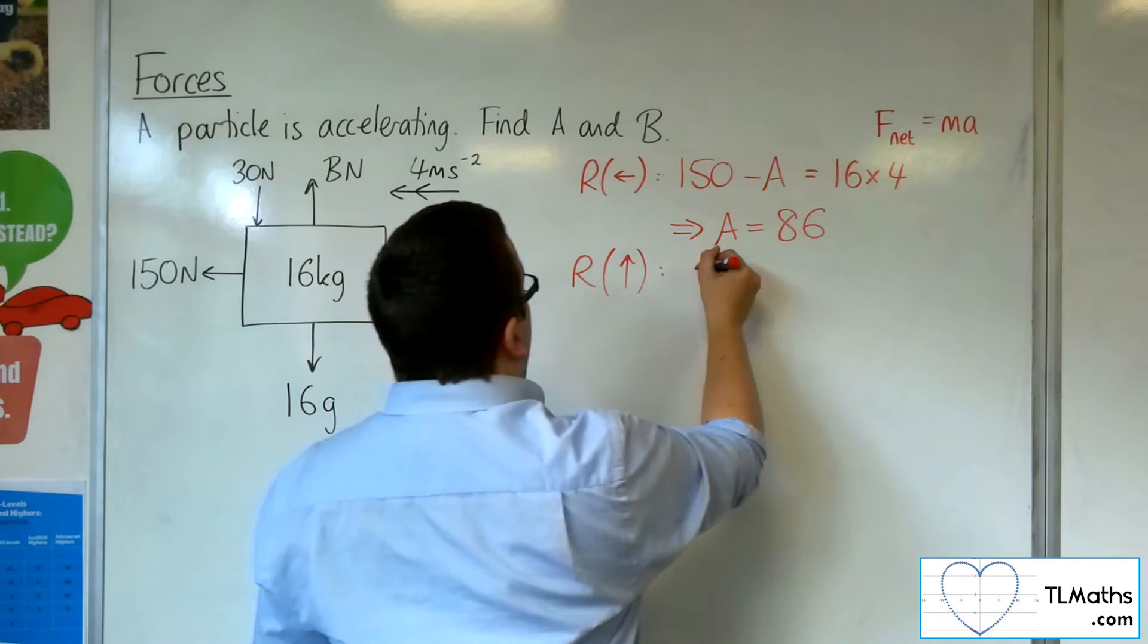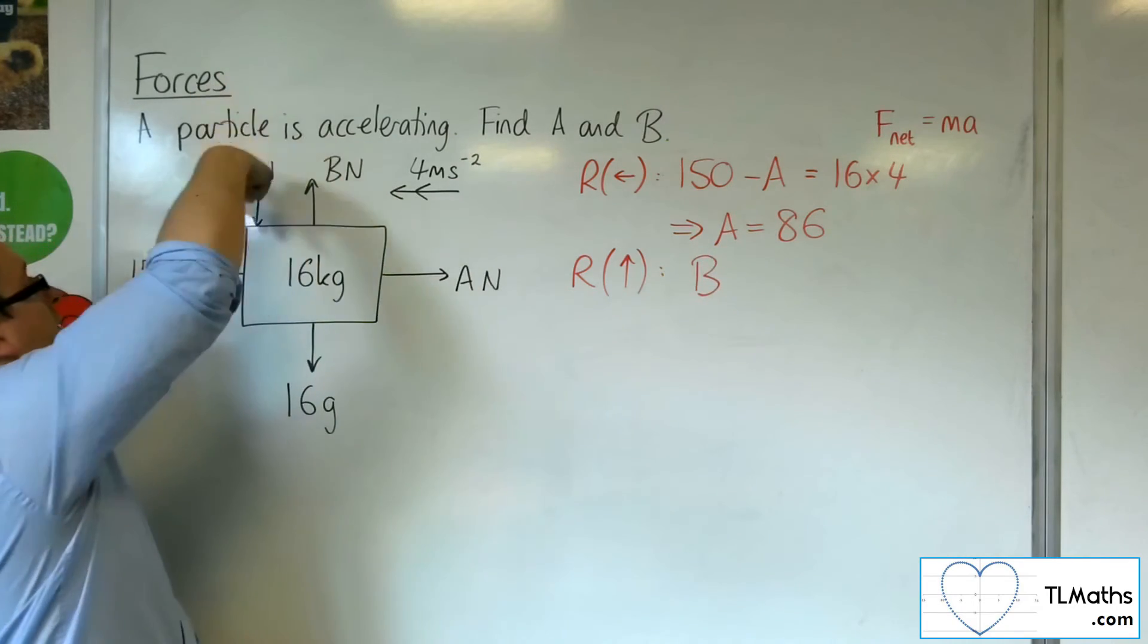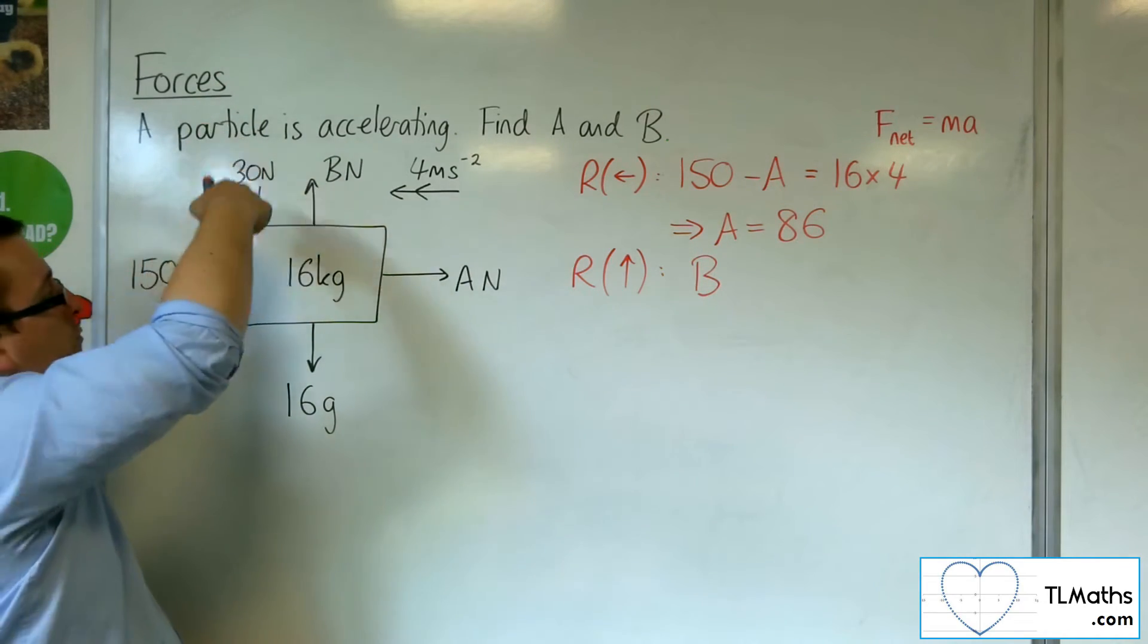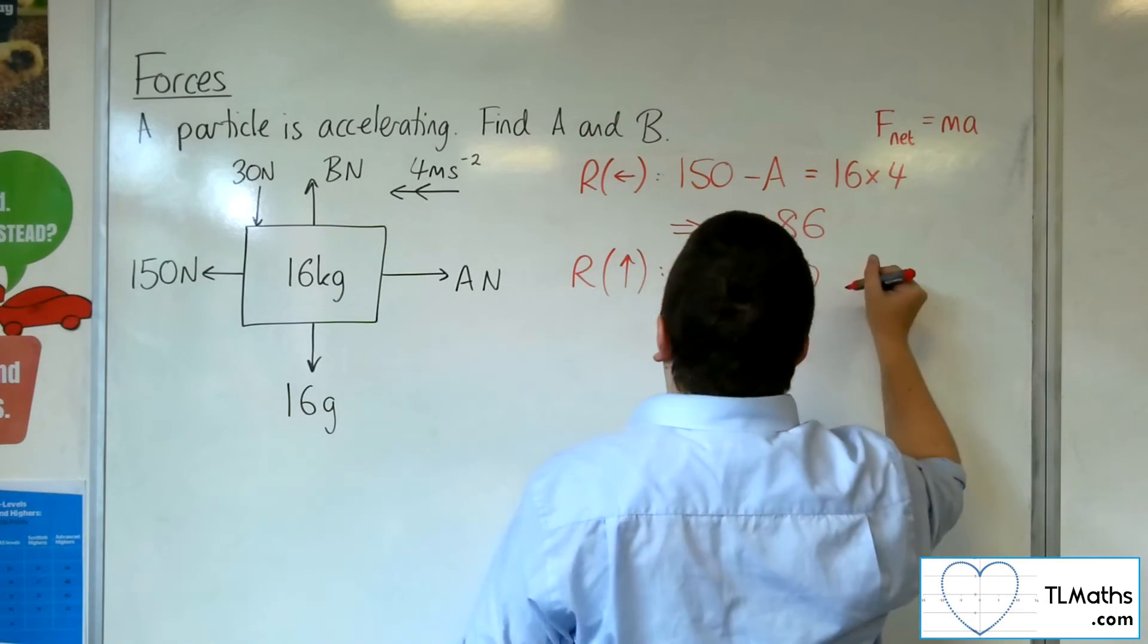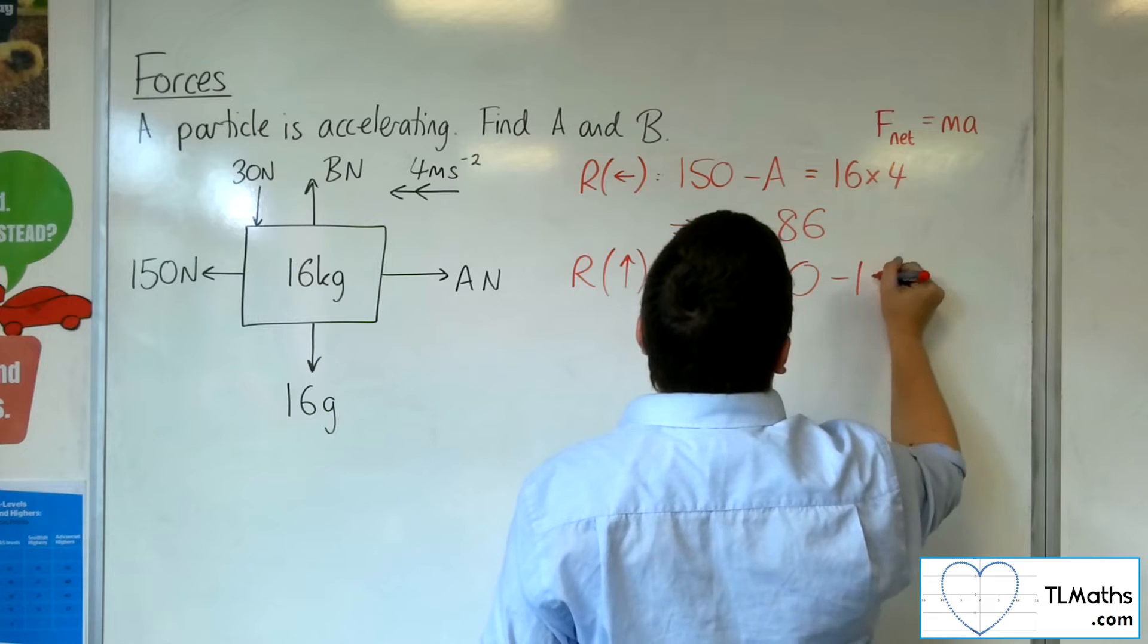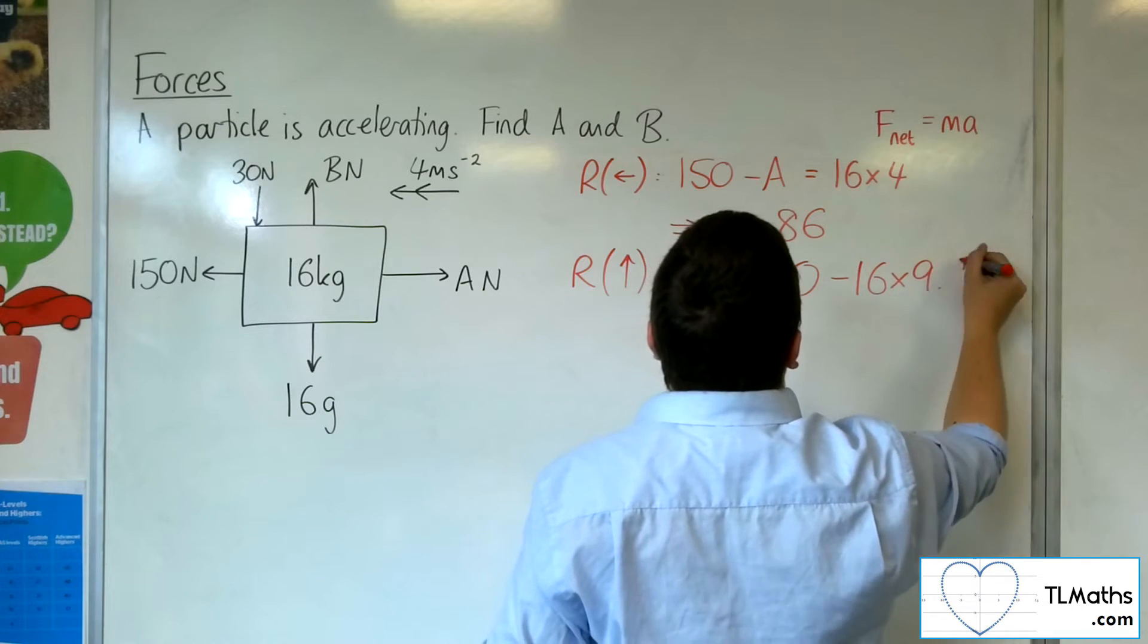So, I've got B, now I've got that sneaky 30 newtons working downwards, okay, so don't forget that. So, I've got that working against me, and I've got the 16 G working against me, so 16 lots of 9.8.